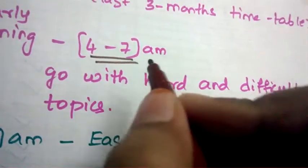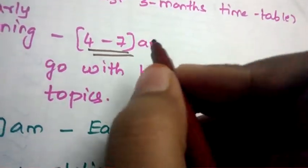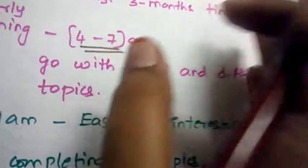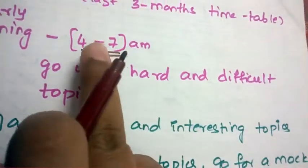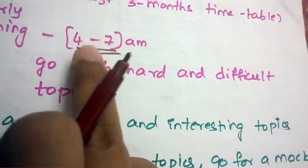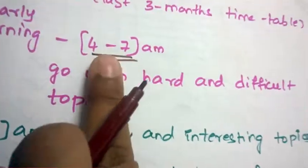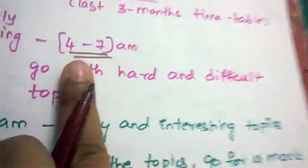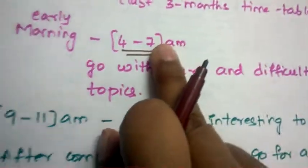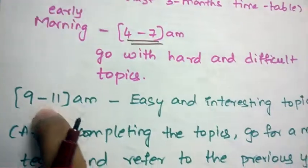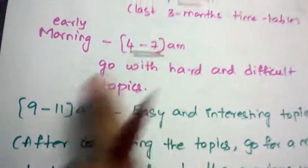Your memory power will be twice what it is during the day or evening. If you study a topic for two hours at this particular time, you can complete it within 40 minutes or half an hour. This is a very essential and effective time, so always go with hard and difficult topics at this time. Next, take a break from 7 to 9, and again...